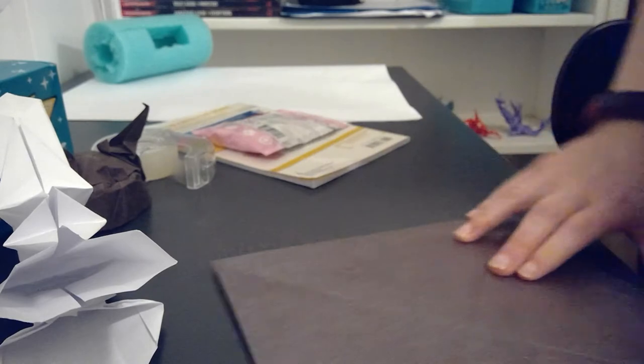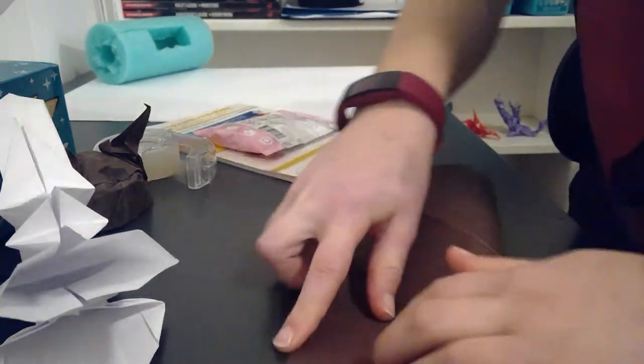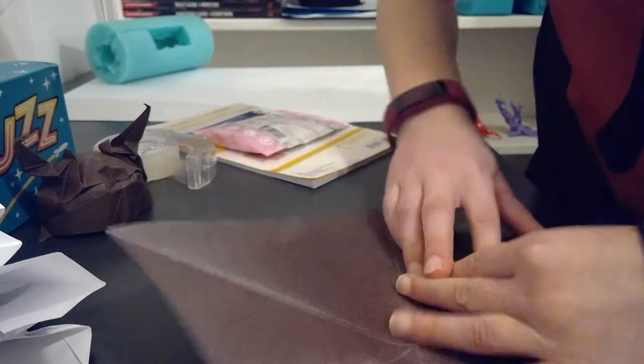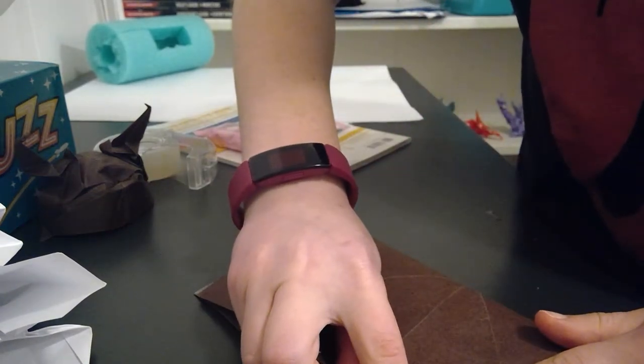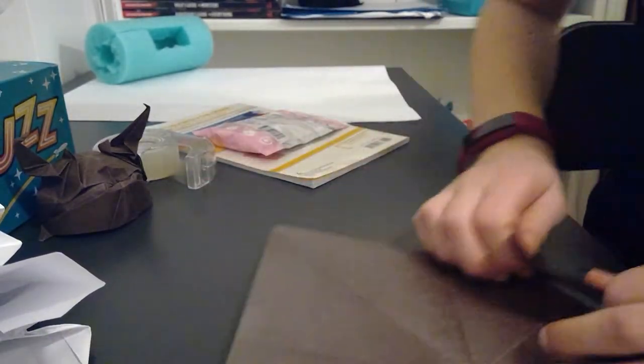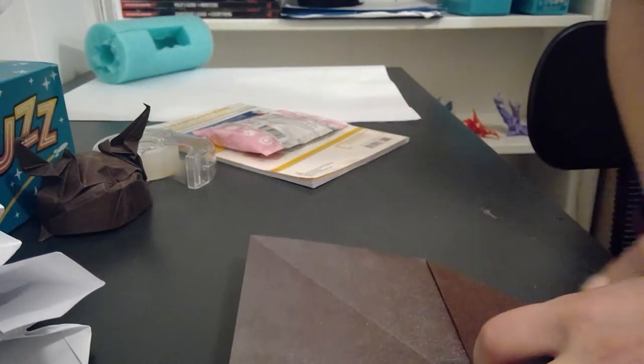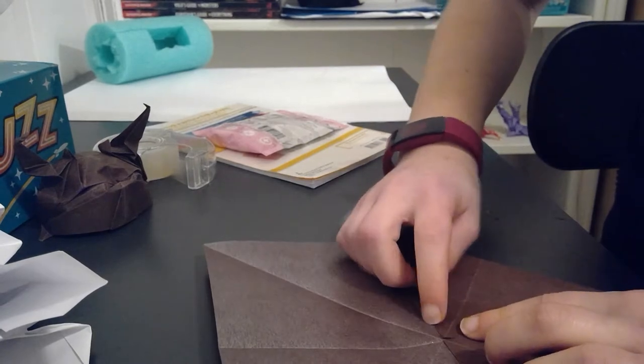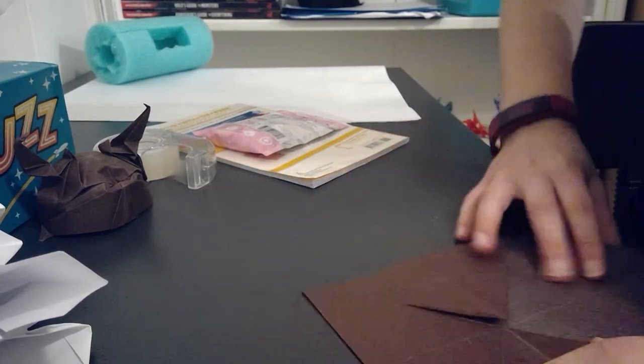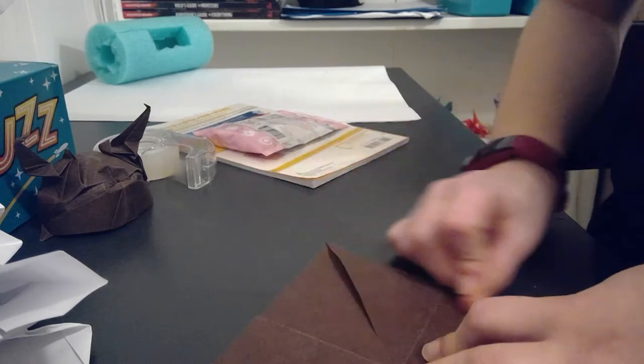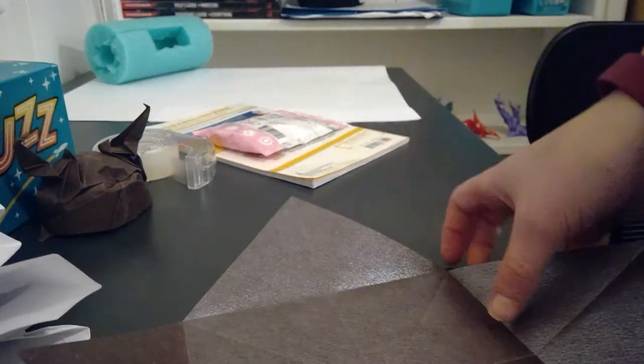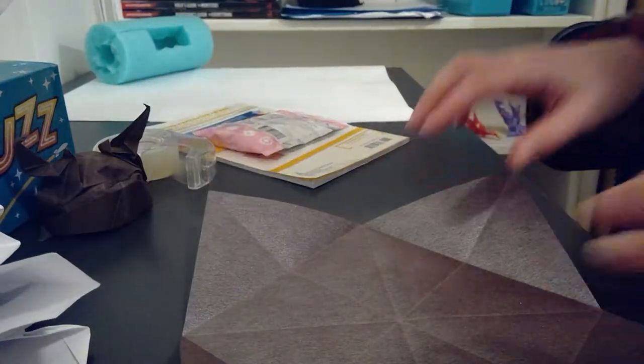Now we're going to fold the corners to the middle. I will warn you this is a fairly complex model - I'd say it's more of a low intermediate, but it's still pretty hard. If you're very new to origami I would not recommend it at all. Once you fold the corners to the middle, unfold.